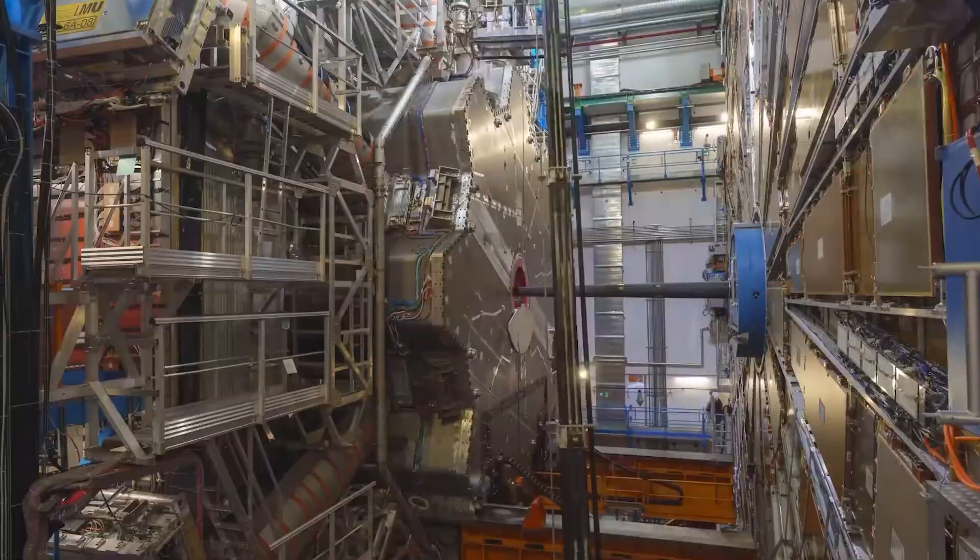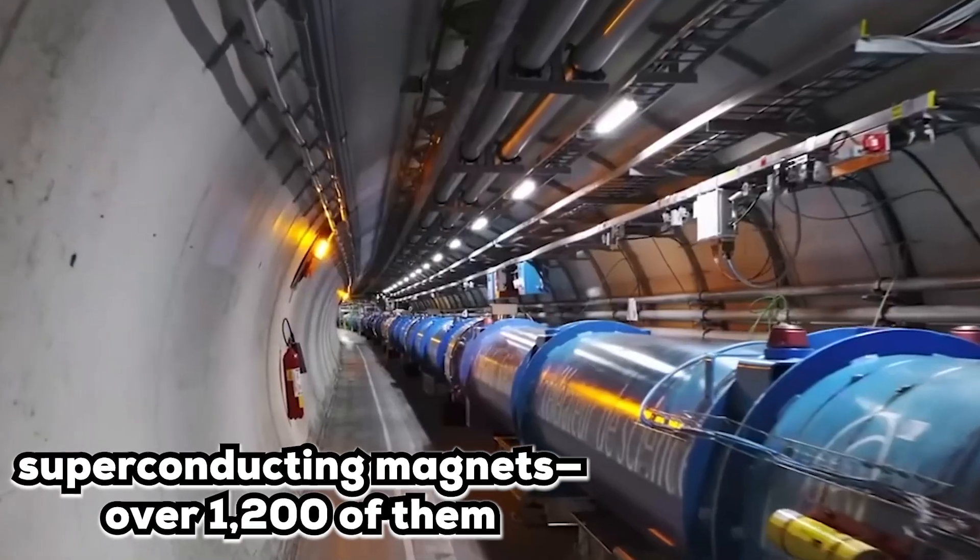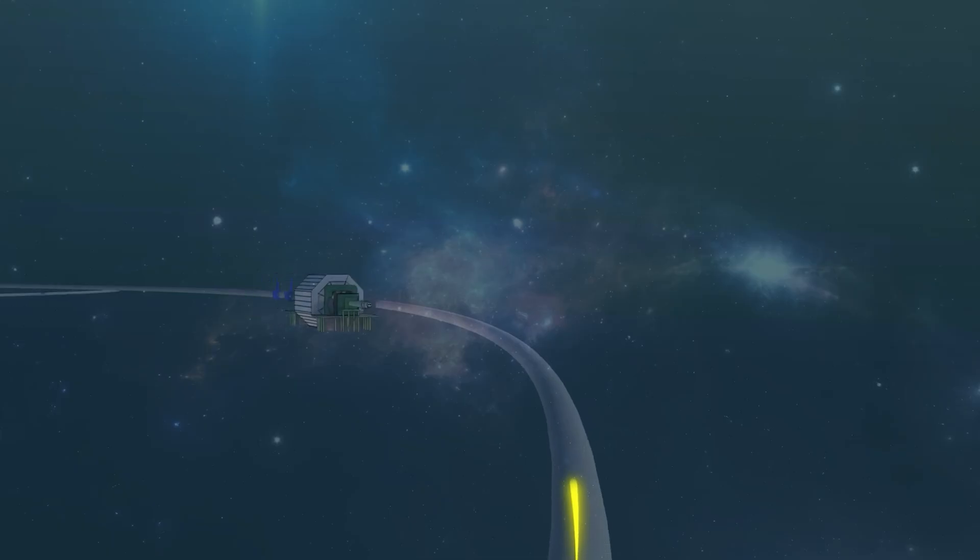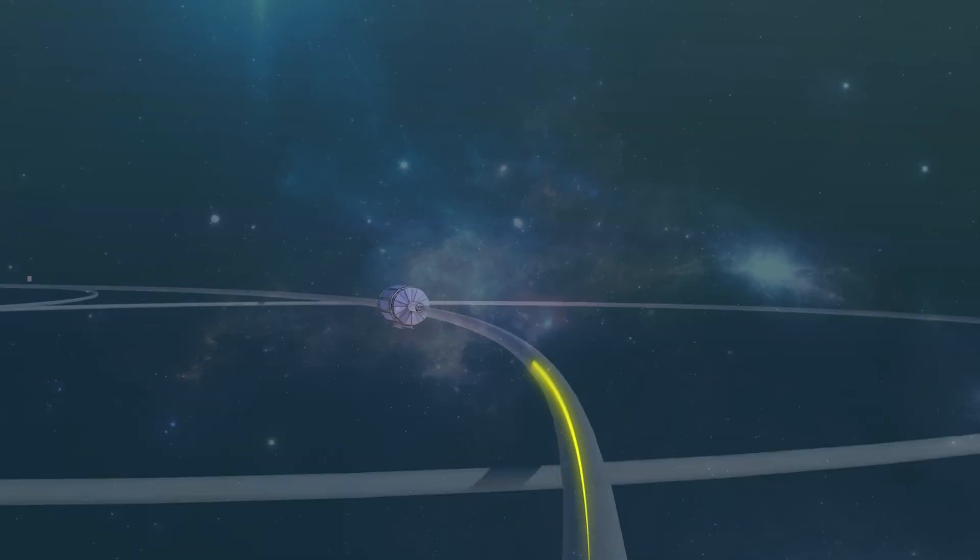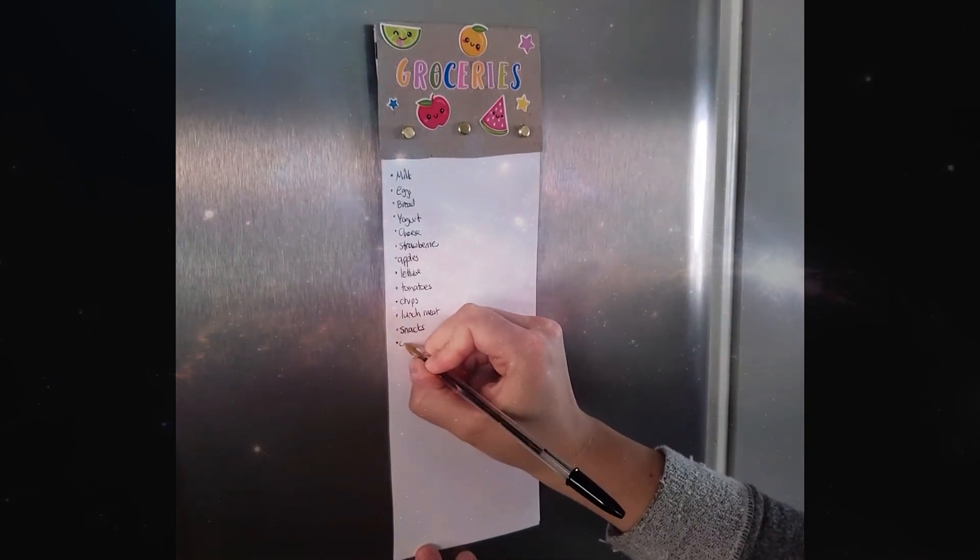The whole thing starts with magnets. And not the fridge kind, we're talking superconducting magnets. Over 1,200 of them, cooler than outer space and designed to bend particle beams around that 17-mile loop. Just think about that next time your fridge magnet gives up on holding a grocery list.